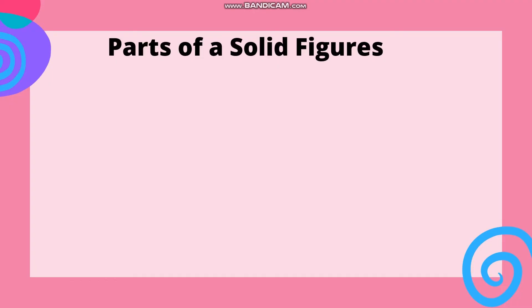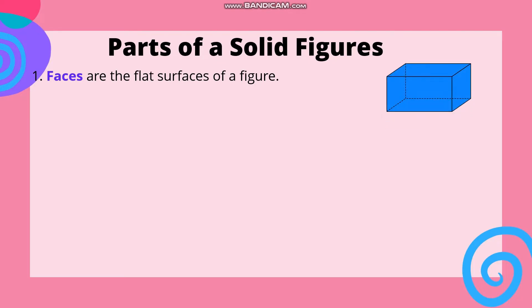Parts of a solid figure. Number one: Faces. Faces are the flat surfaces of a figure. Kapag sinabing faces, ito yung surface or cover ng solid figures. Gamitin nating example muli ang rectangular prism. What are the faces of a rectangular prism? We have the top, bottom, front, back, side one, and side two — a total of six faces.